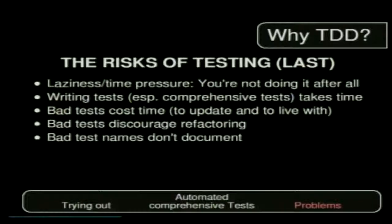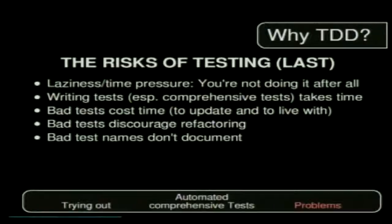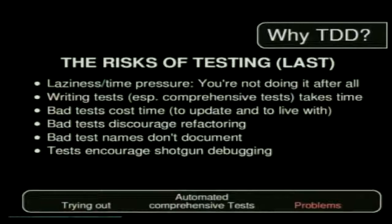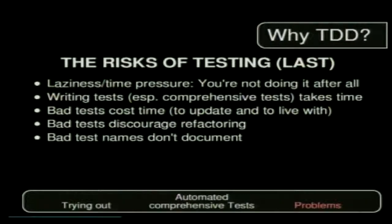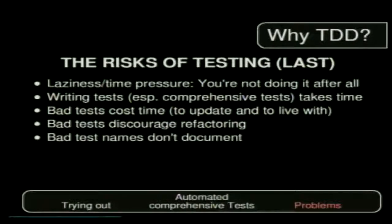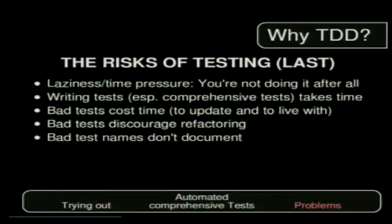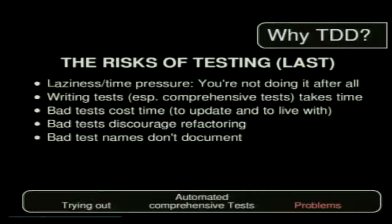With all things, if you simply don't do it right, you don't get the benefit out of it. I said the benefit of good test names is that they document — if the test names are not good, they don't document. This has something to do with the robustness of the methodology. Testing itself doesn't seem to be robust because the worse you do it, the less benefit you get. A robust system would be: you do it halfway correct and you still get good benefits — but that's not the case.